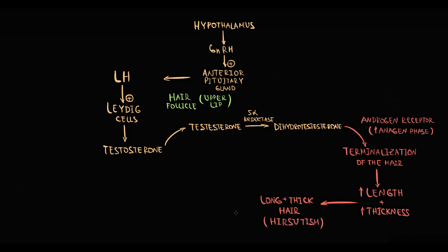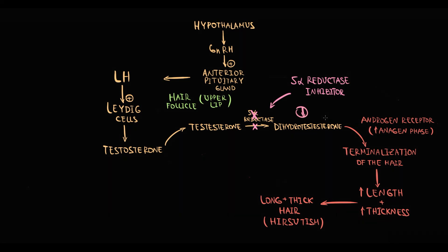The presence of excessively thick hair on the upper lip in women is pathological and is known as hirsutism. Intake of 5-alpha reductase inhibitors decreases the production and concentration of dihydrotestosterone in the hair follicle. As a result, the effect of dihydrotestosterone on the hair follicle decreases, permitting a reduction in the severity of hirsutism.